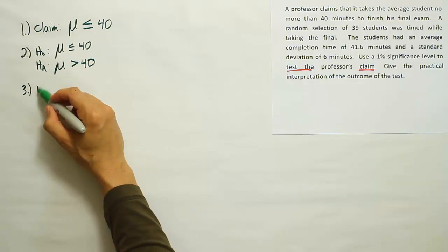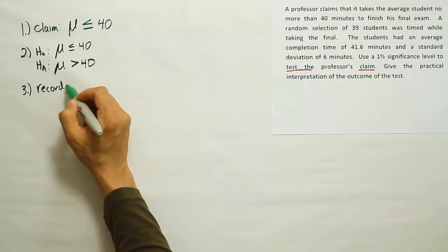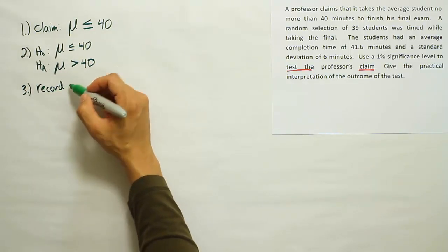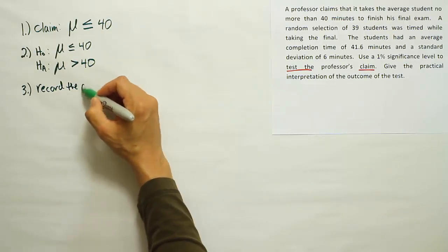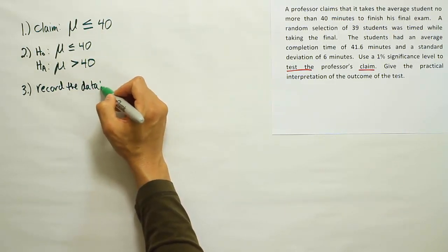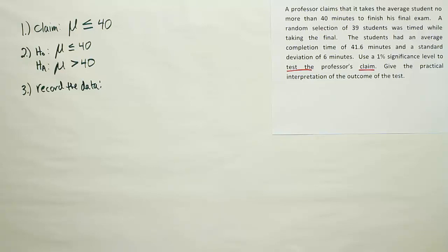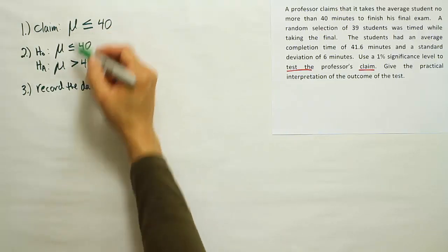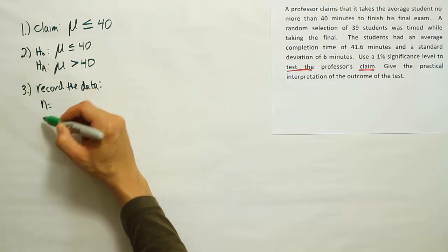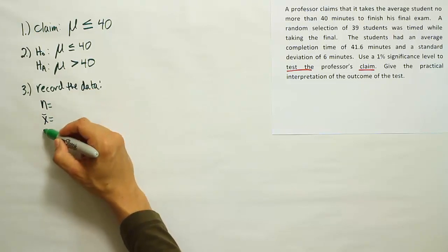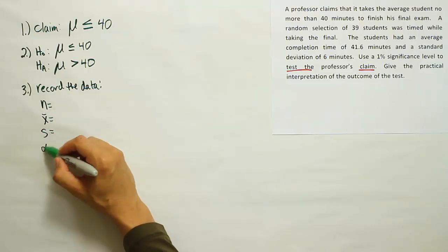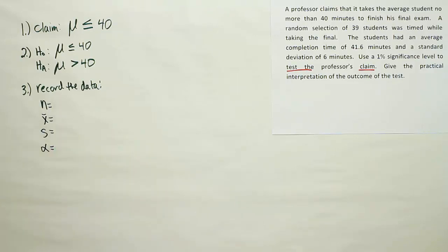Next step is to create, or record, sorry, the data. A real problem in the real world, you would actually have to come up with the data by doing sampling. Here, however, you just take it from the problem, so record it from the problem. All right, so let's try to figure out the things we need for a hypothesis test about the mean. We will have an N, we will always have an X bar, we will have a standard deviation of some sort, and we will have a significance level of some sort.